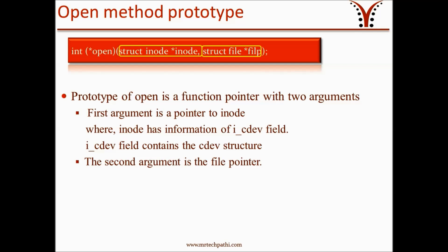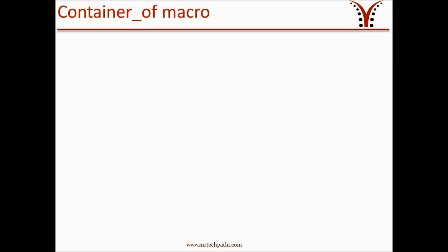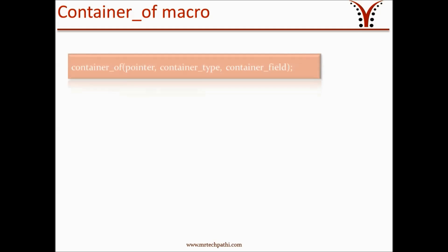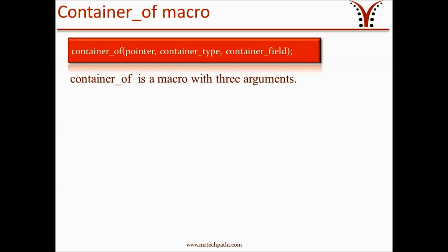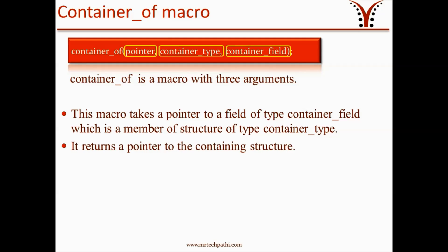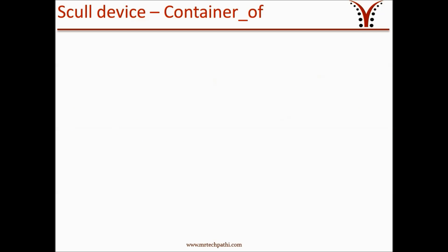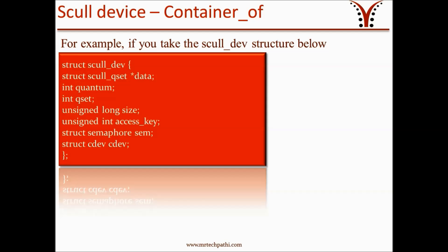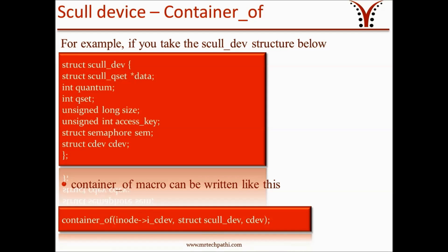Before going much further into the open method, let's discuss the container_of macro, which is used extensively in Linux. container_of is a macro with three arguments. This macro takes a pointer to a field of type container_field, which is a member of a structure of type container_type, and it returns a pointer to the containing structure. For example, if you take the skull device structure which we saw in Linux Device Driver part 14, container_of macro can be written like this. This macro returns a pointer i_cdev to cdev within a structure of type skull_device. It's a little hard to understand container_of macro in the beginning, but once you use it more, you will feel more comfortable with it.